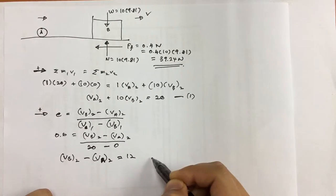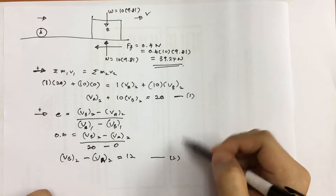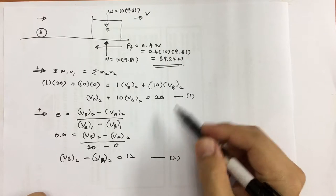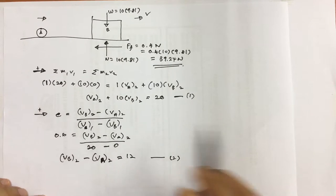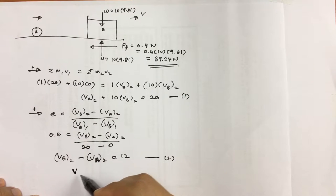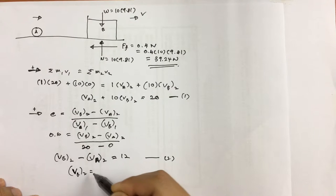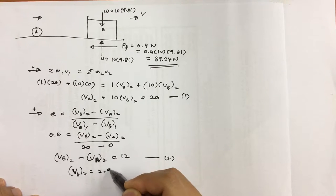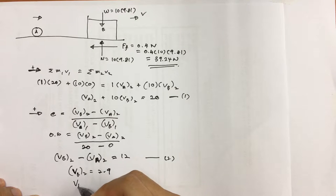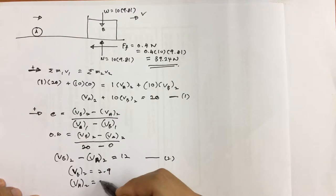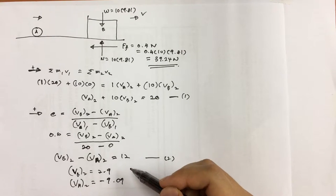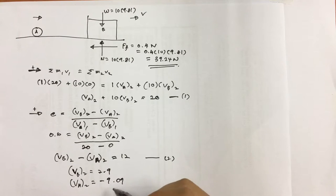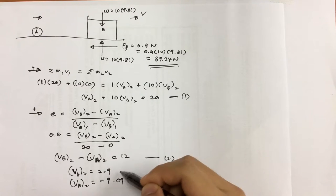We now have two equations and two unknowns, so we can solve for both VB2 and VA2. Solving the system gives us VB2 = 2.9 meters per second and VA2 = −9.09 meters per second. This means that after the impact, ball A bounces back to the left and block B moves to the right.